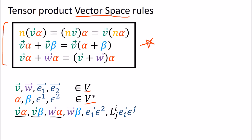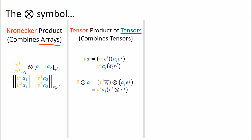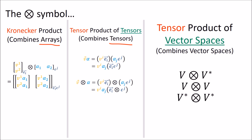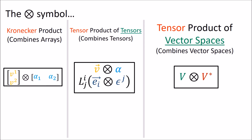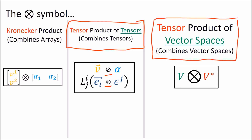The answer is that all of these live in the vector space V⊗V*. This is actually a new use of the circle-times symbol — rather than combining vectors or tensors, we're combining vector spaces. In total we've come across three different uses of the circle-times symbol: the Kronecker product, which combines two arrays into a new array; the tensor product of tensors, which combines two tensors into a new tensor; and now the tensor product of vector spaces, which combines two vector spaces into a new vector space.